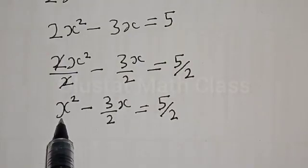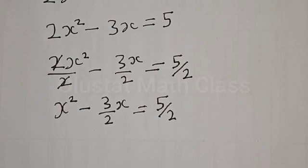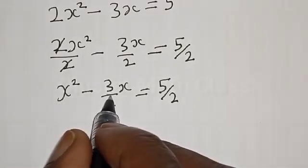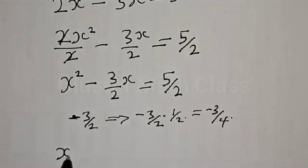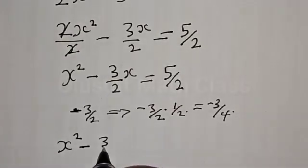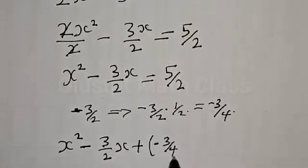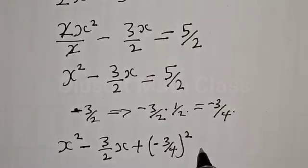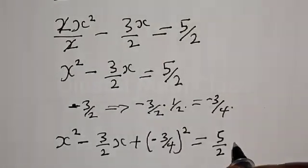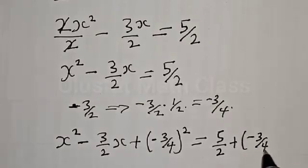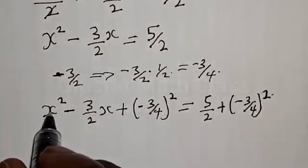Let's add the square of half of the coefficient of s to both sides. The coefficient of s here is -3/2, and half of that is -3/4. So we have s² - (3/2)s + (-3/4)² = 5/2 + (-3/4)².